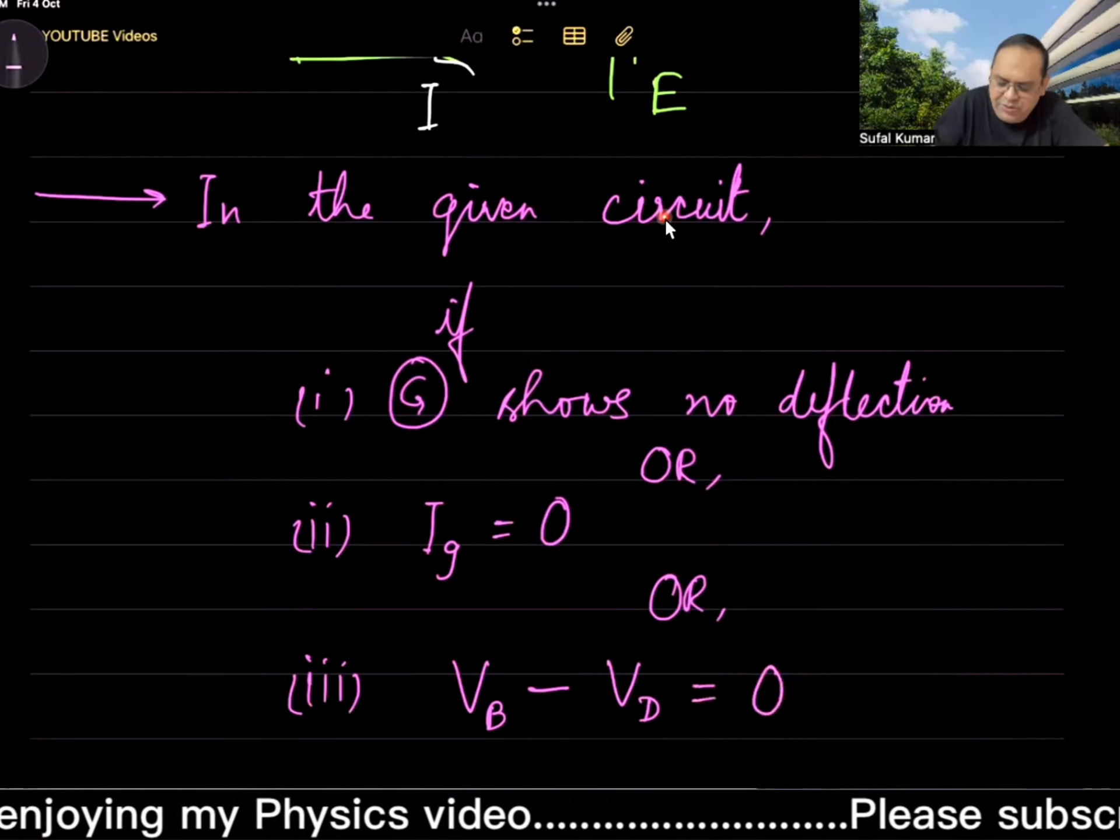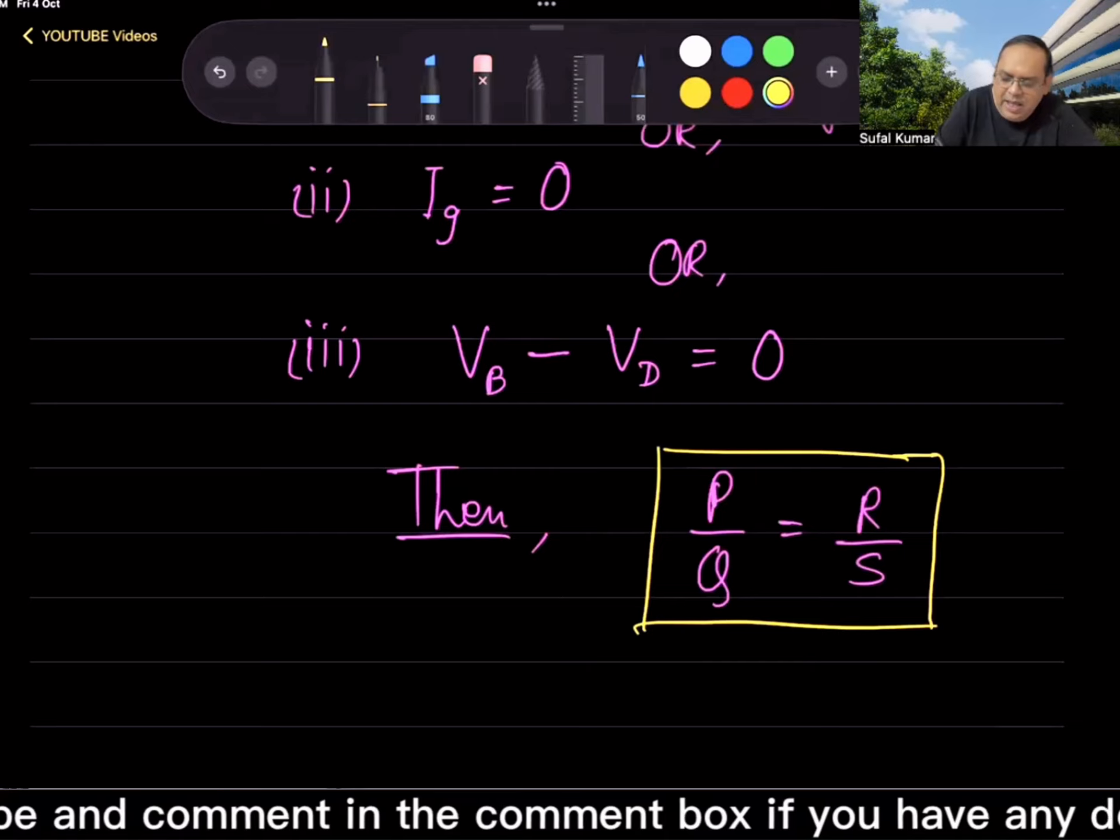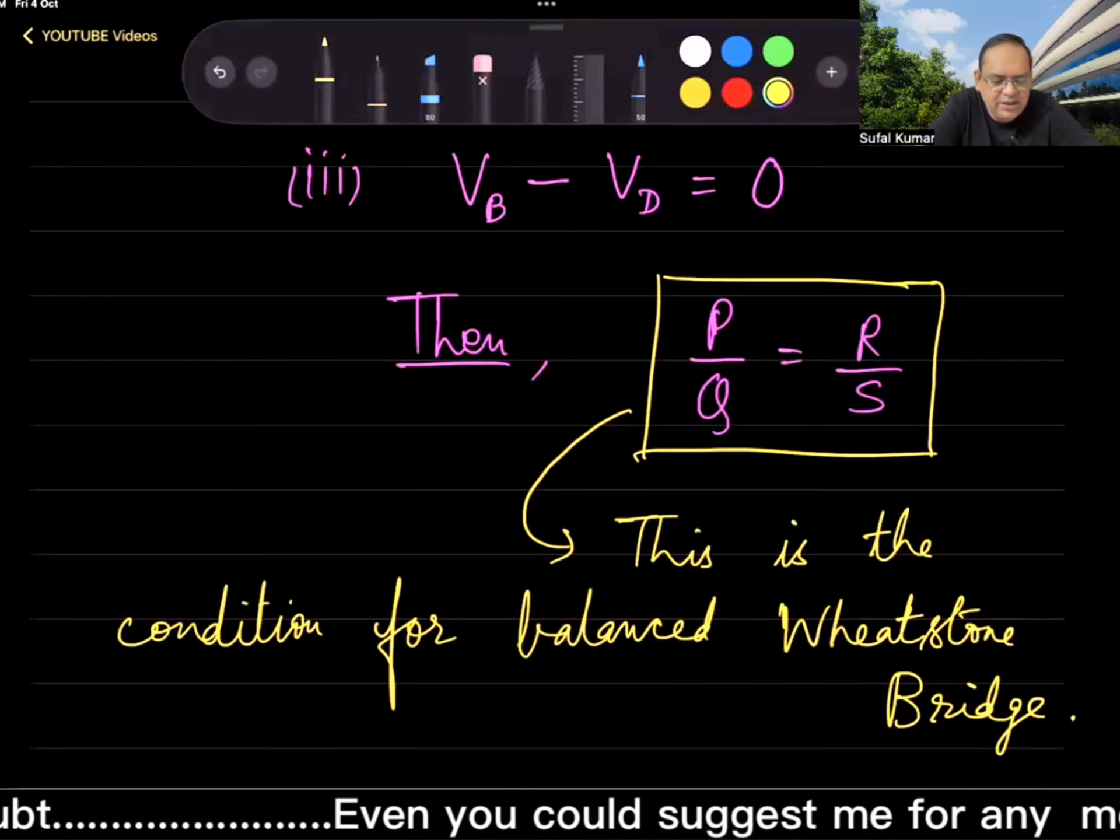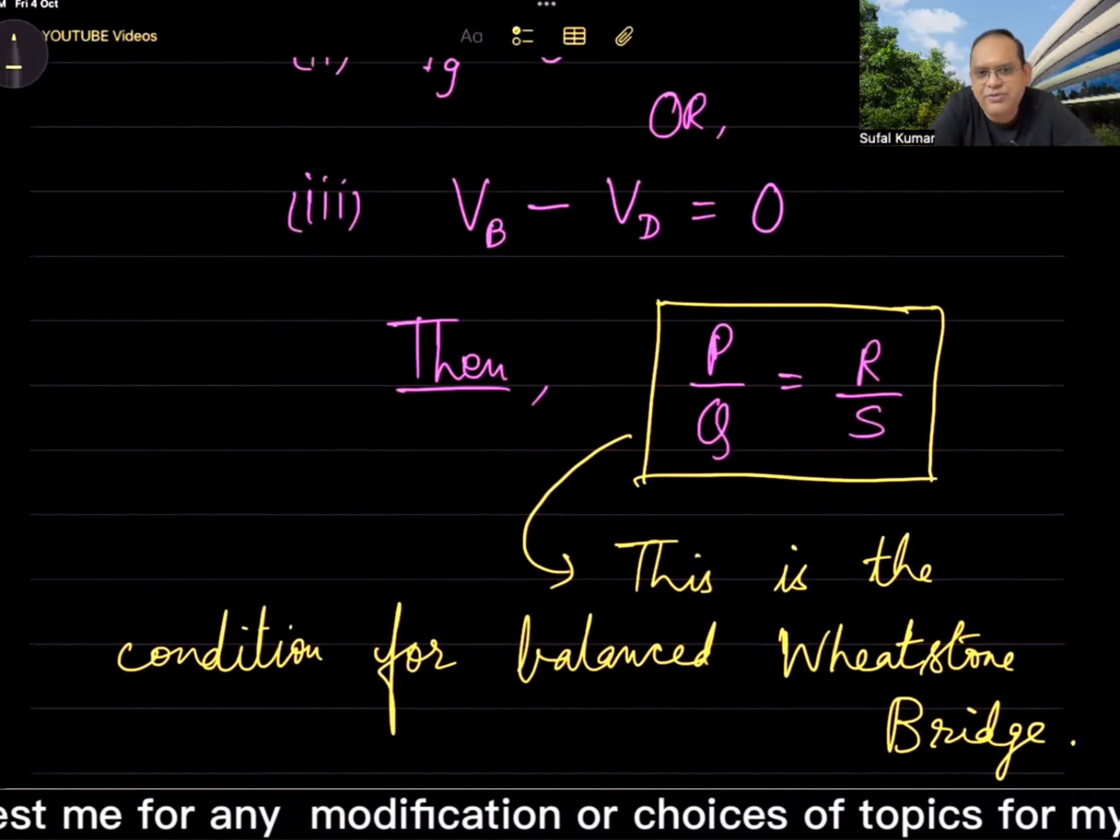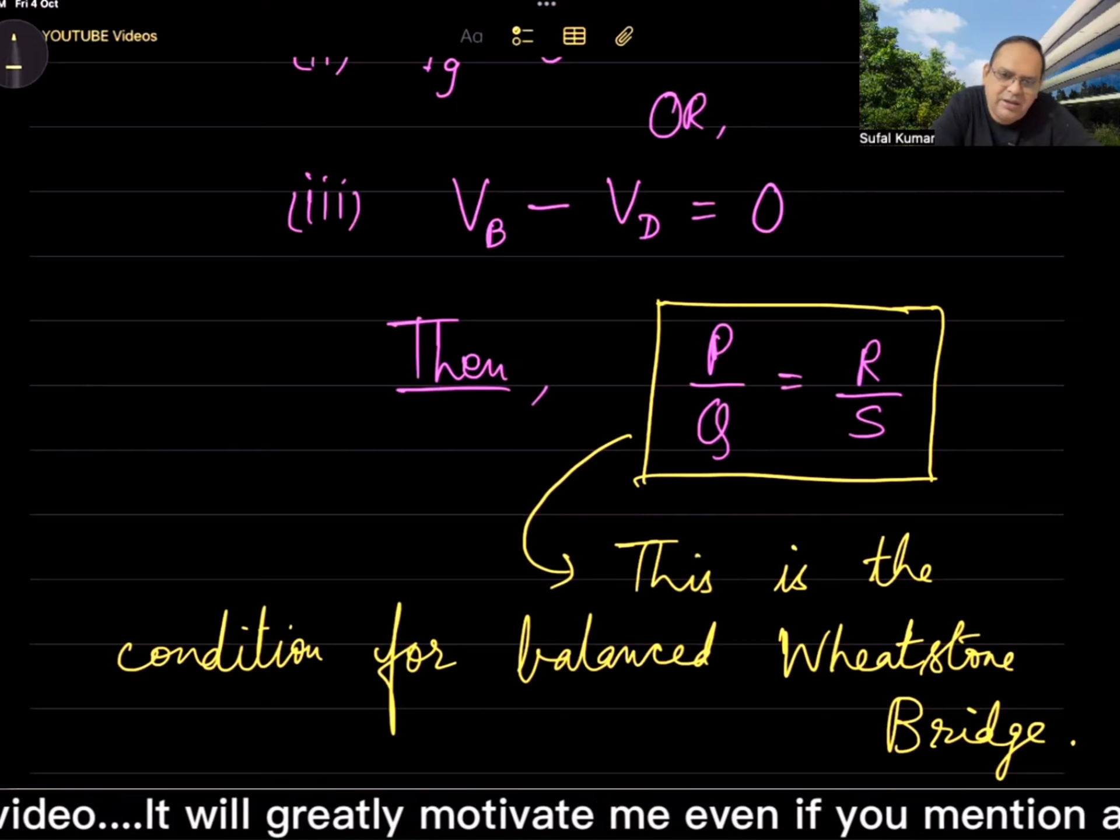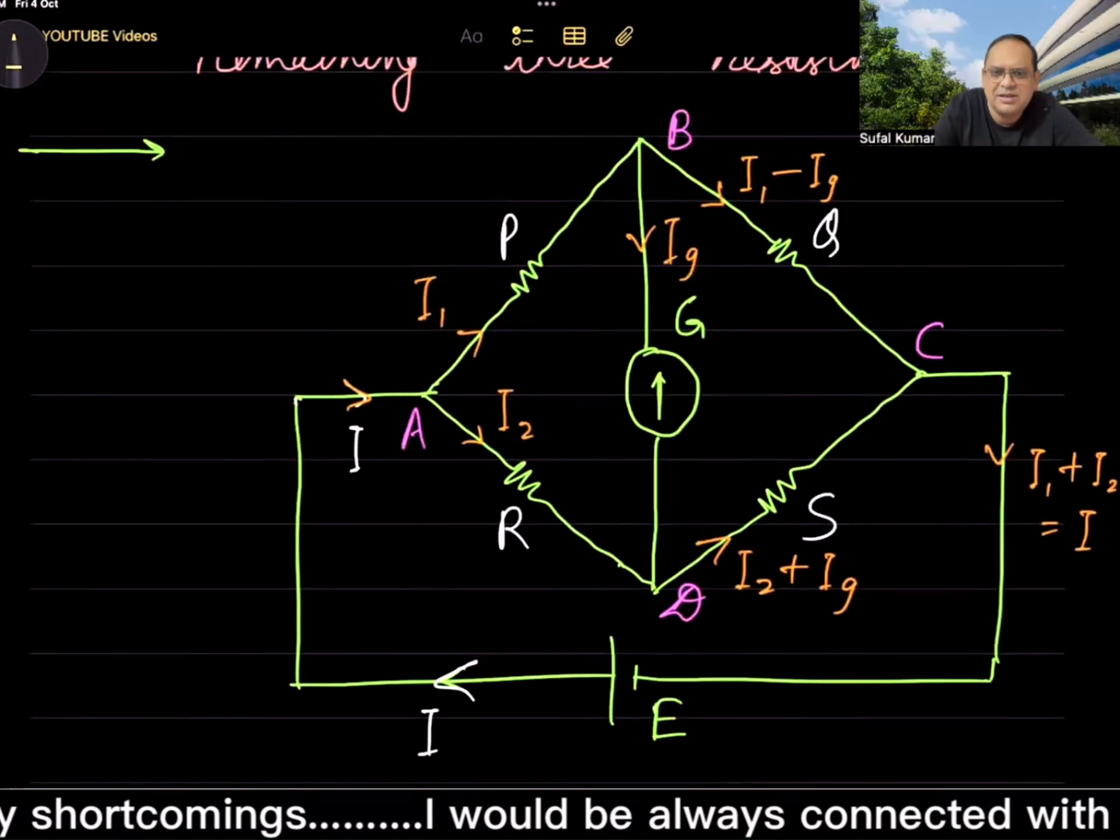Or the third option I'm indicating: four points namely—I'll repeat. First let me indicate all the branch currents. This is I₁ - Ig, and after combining I₂ and Ig here, I₂ + Ig, and then I₁ + I₂ = I.